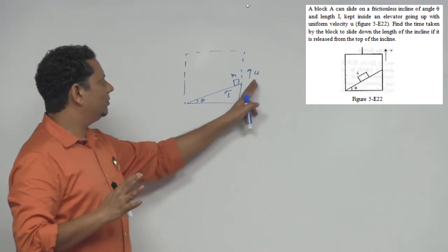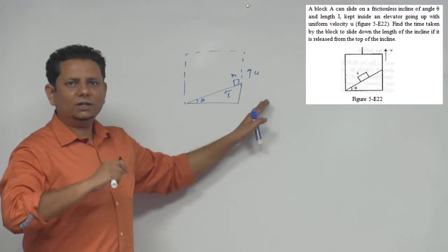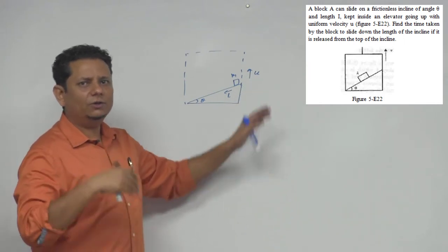But in this case, because it is uniform velocity, you have an inertial frame, so uniform velocity or rest are equivalent.